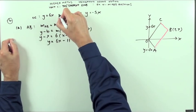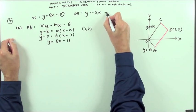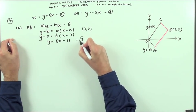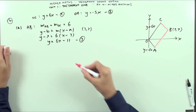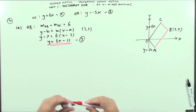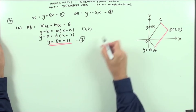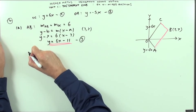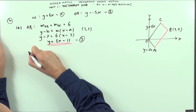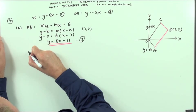I'll give that a name. I'll call that equation 3. I've got Y equals 6X minus 11 for AB. I need the equation of BC.